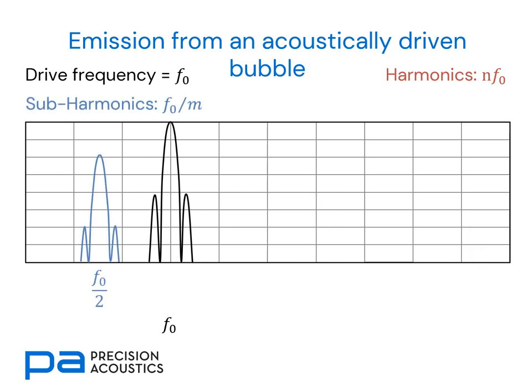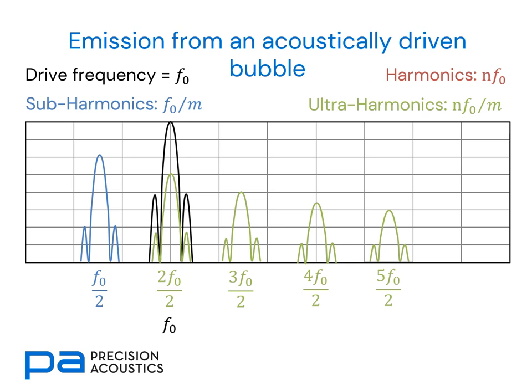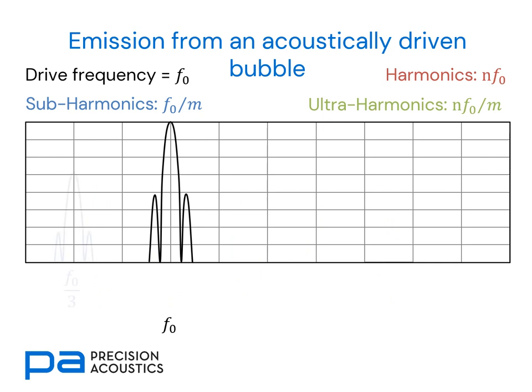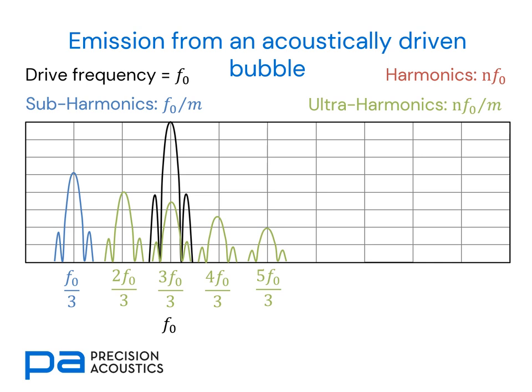We may also see subharmonics, which are integer divisors of the fundamental. But to further complicate matters, we could also see ultraharmonics, which are integer multiples of subharmonics. Clearly some of these can be coincident with other spectral features. So the 2f0/2 is going to be coincident with the fundamental, and the 4f0/2 would be coincident with the second harmonic. If we start with f0/3, we can see the ultraharmonics that extend upwards from that as well.